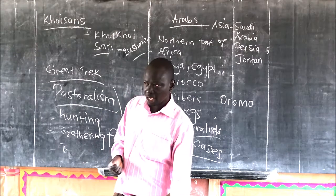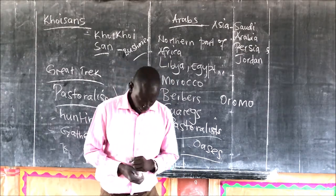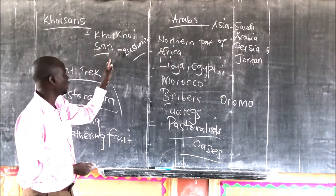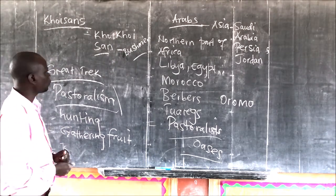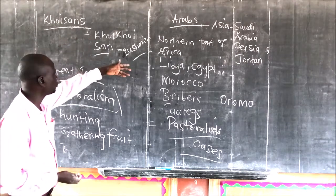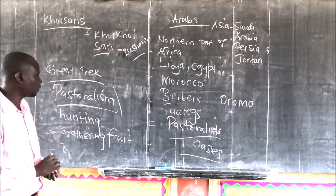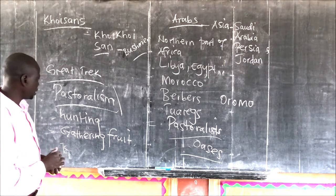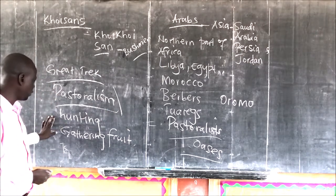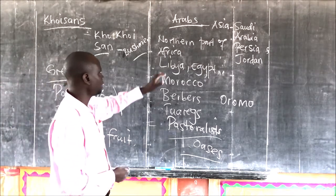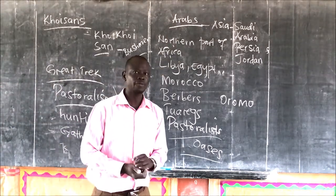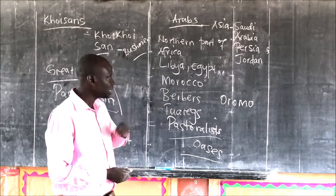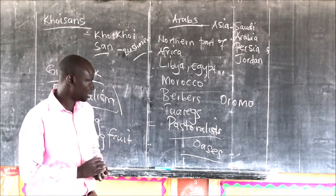Their principal economic activity is basically cattle keeping — pastoralism. We have also talked of the Khoisan; under the Khoisan we have the Khoikhoi and the San, commonly known as the Bushmen. What made them move to the Kalahari Desert was the effect of the Great Trek — the massive movement of the Dutch from the coast of Cape Town into the interior. Lastly, we have looked at the Arabs, who came from Arabia and inhabit the northern part of Africa in countries like Libya, Egypt, and Morocco. Originally the area had the Berbers and the Tuaregs as the original inhabitants.